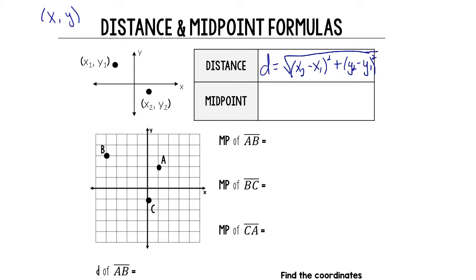Again, we'll be using those X1, Y1, X2, Y2 points. Next, the midpoint — we write MP for midpoint — and that equals a coordinate point in parentheses. So we'll do X1 plus X2 over 2 for the X part, and Y1 plus Y2 over 2 for the Y part. It's like the average of the X values gives us the X point, and the average of the Y values gives us the Y point.